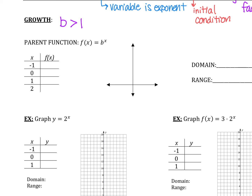Our parent function is f(x) = b to the x. The reason it's a bit unusual is because that b could be anything — it could be 2 to the x, 3 to the x, or 5 to the x. They all have their own parent functions.